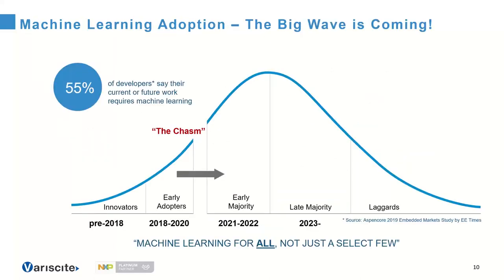Switching gears to machine learning — the wave finally appears to be here. An EE Times survey from 2019 indicated that 55% of developers said their current or future work requires machine learning of one kind or another, and that number is much higher now. 2021 really seems like the year when a significant portion of the design world is ready to dig in.